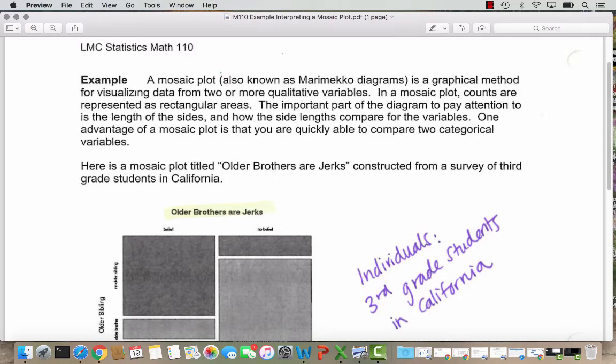In this example, we are going to look at a mosaic plot. Mosaic plots are also known as Marimekko diagrams and it's a graphical method for visualizing data from two or more qualitative variables. Qualitative variables are categorical variables, it's just another way of describing categorical variables.